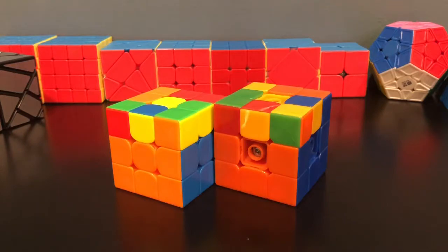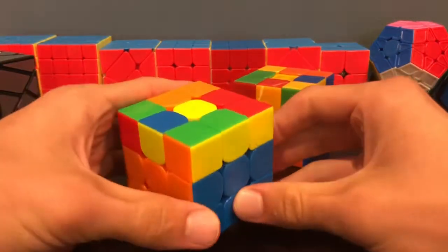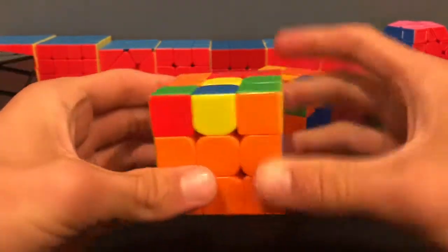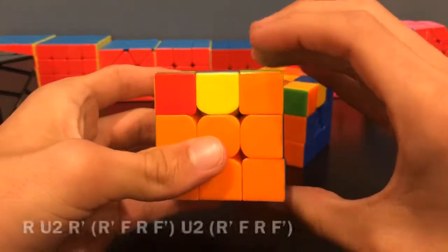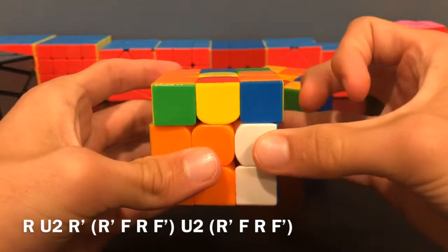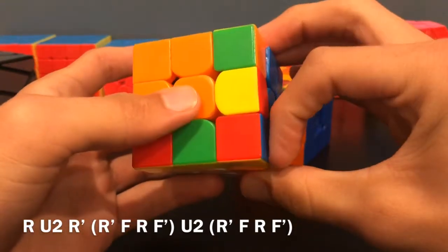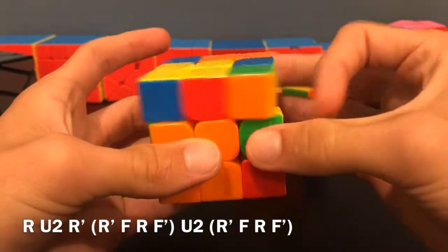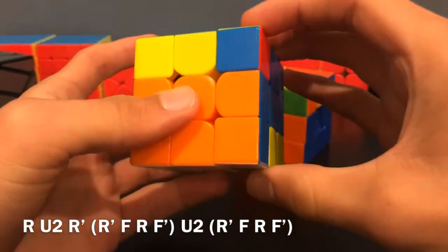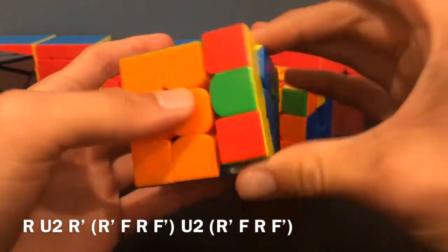These next two cases are just a series of taking F2L pairs out and then sledgehammering them in. For this one, which is where you have blocks of three, you'll do this algorithm: R U2 R2' F R F' U2 R' F R F'.